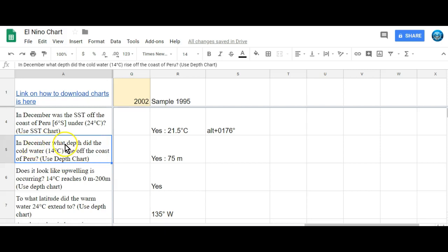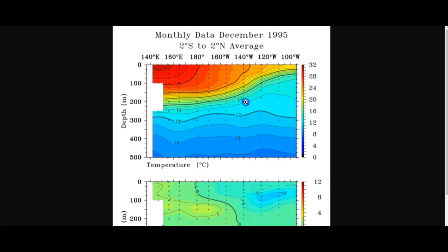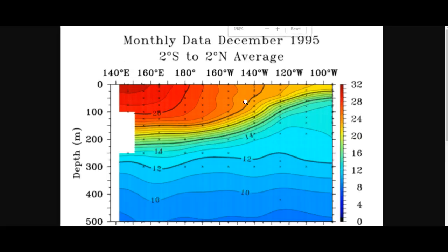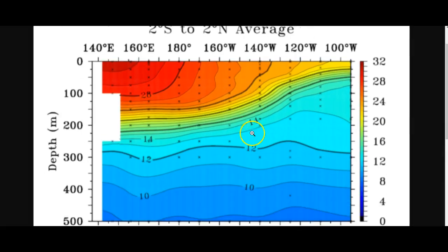So the first question is, in December, what depth did the cold water, 14 degrees Celsius, rise off the coast of Peru? Again, using our depth chart. So first off, I need to find this top one. And what I'm looking for is this 14 degree line. Now here's where it gets a little confusing. Now you're not looking at a drone view of the ocean. It's like you're going in the ocean. This is the bottom of the ocean. This is the top of the ocean.